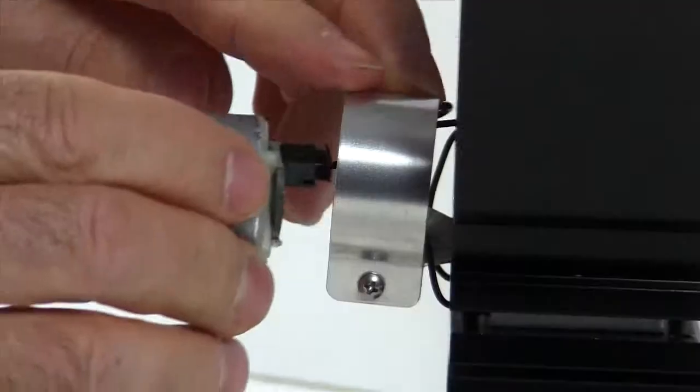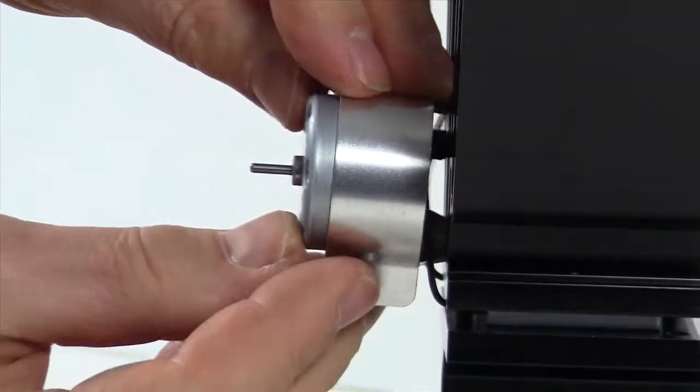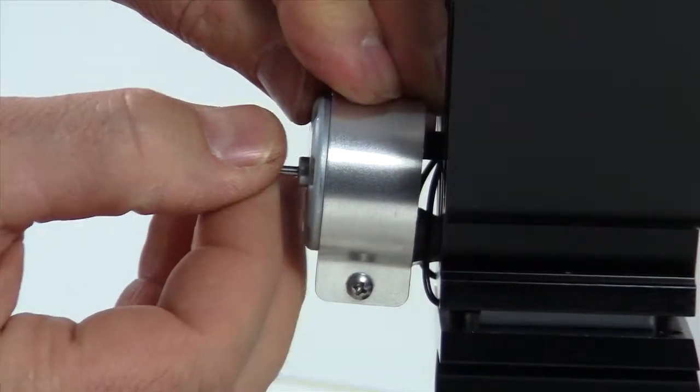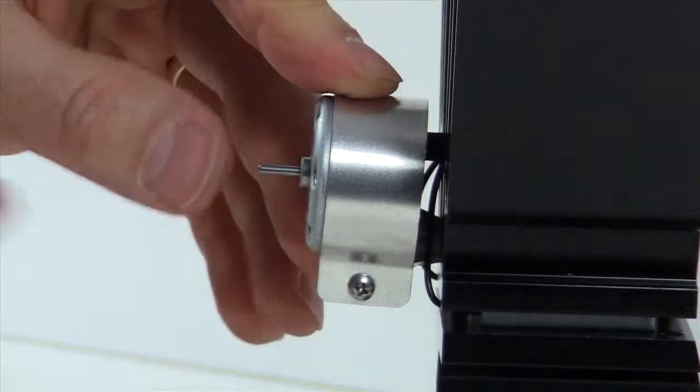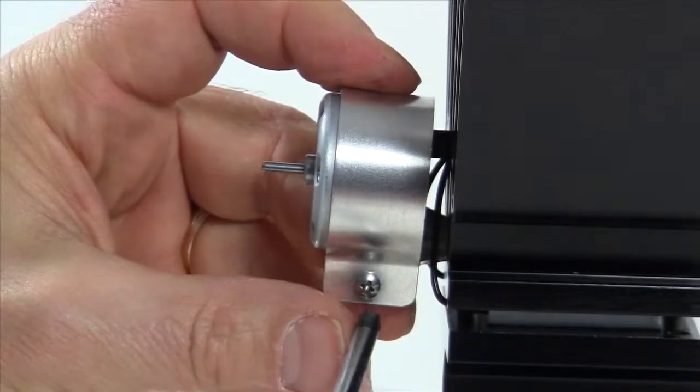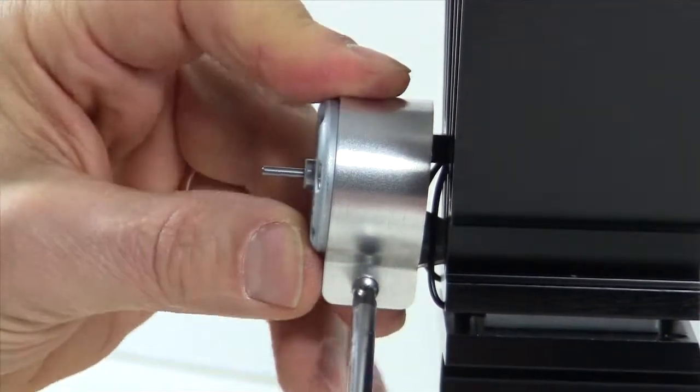Now we put the motor back into the motor bracket. And we want to leave the motor sitting about a sixteenth of an inch outside of that motor bracket. And we want to tighten that screw to secure it in place.